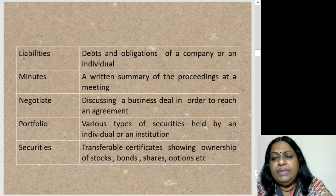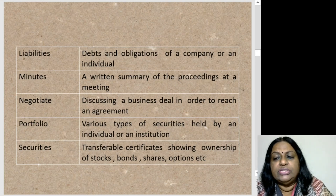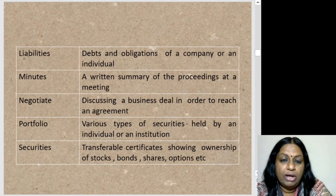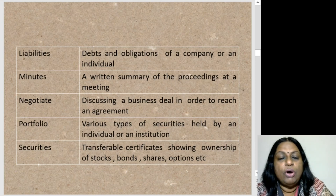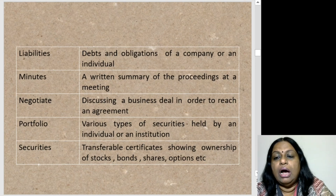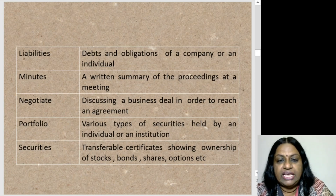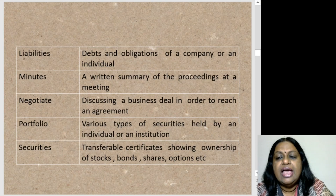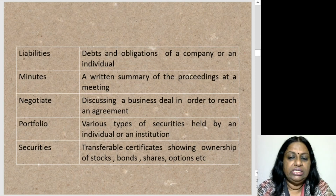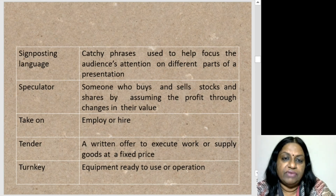Liabilities: debts and obligations of a company or an individual. Minutes: a written summary of the proceedings of a meeting — even in college clubs, you must have minutes of the meeting. Negotiate: to discuss a business deal in order to reach an agreement — you negotiate and then come to a conclusion and seal the deal. Portfolio: various types of securities held by an individual or an institution. Securities: transferable certificates showing ownership of stocks, bonds, shares, options, etc. These are all terminology and technical terms used in the world of business.